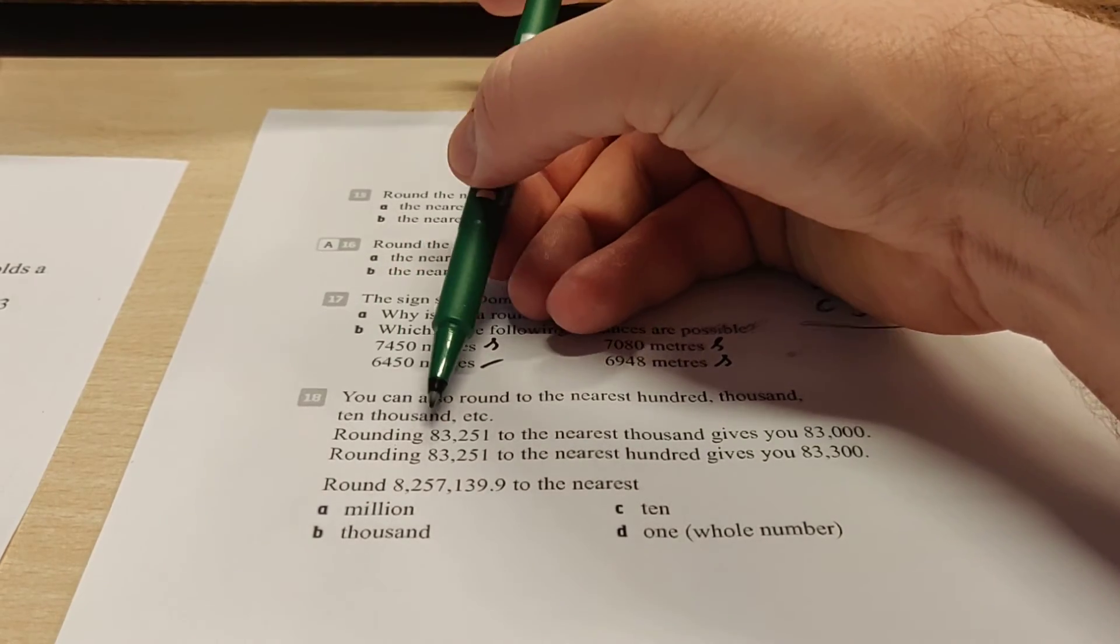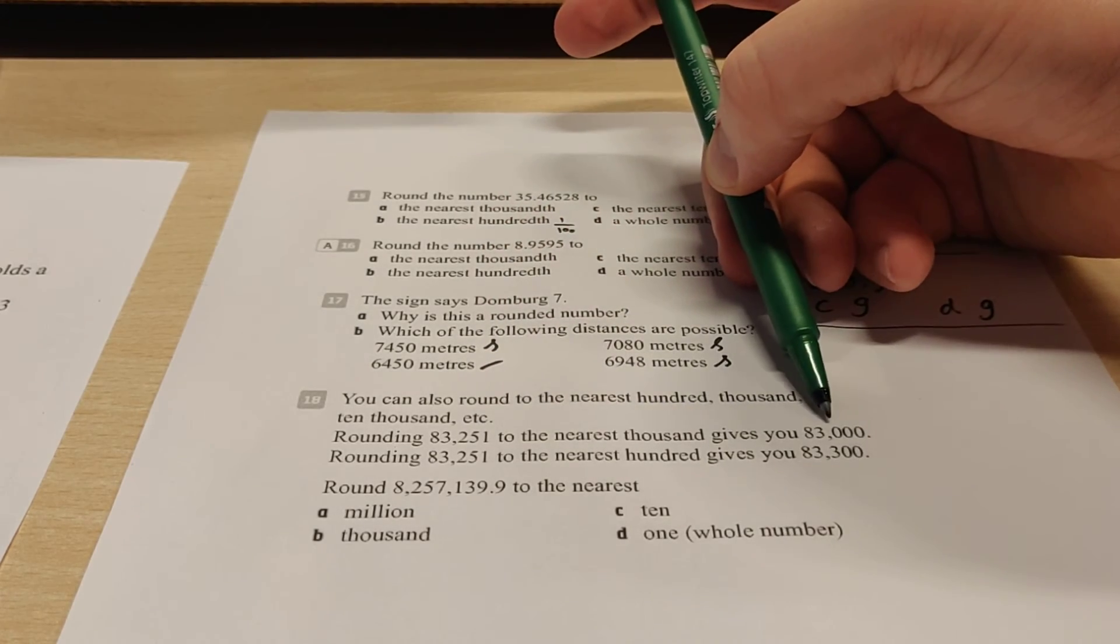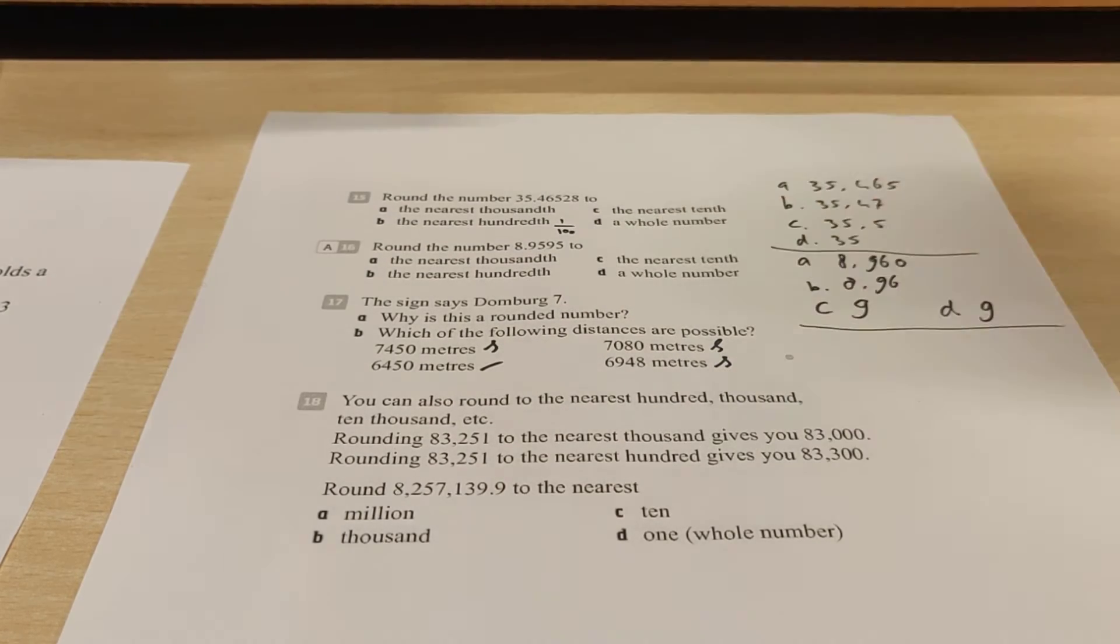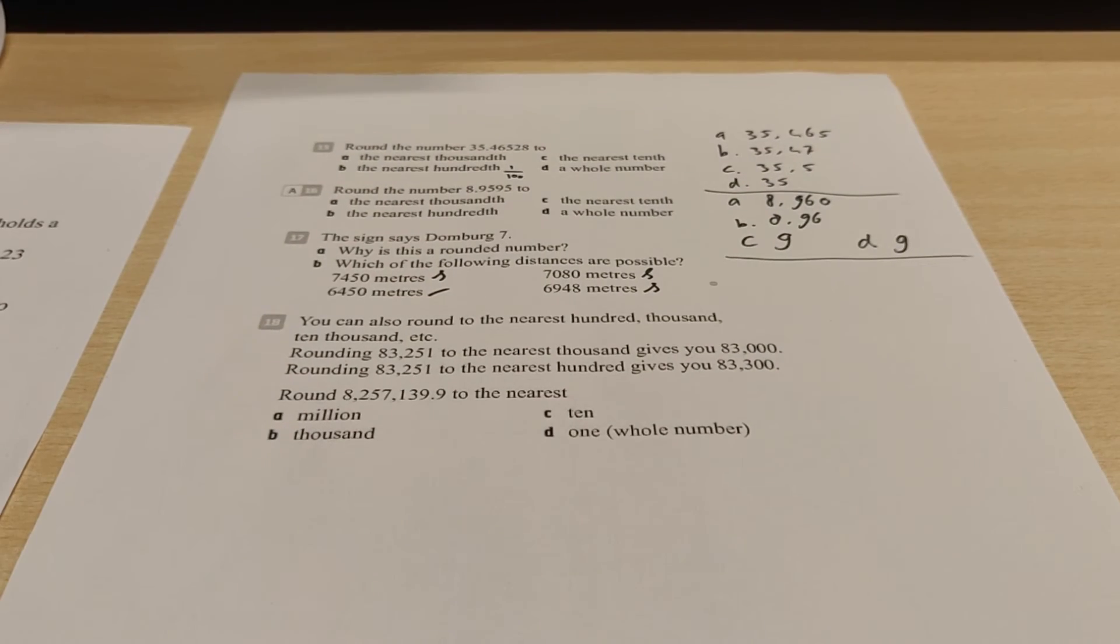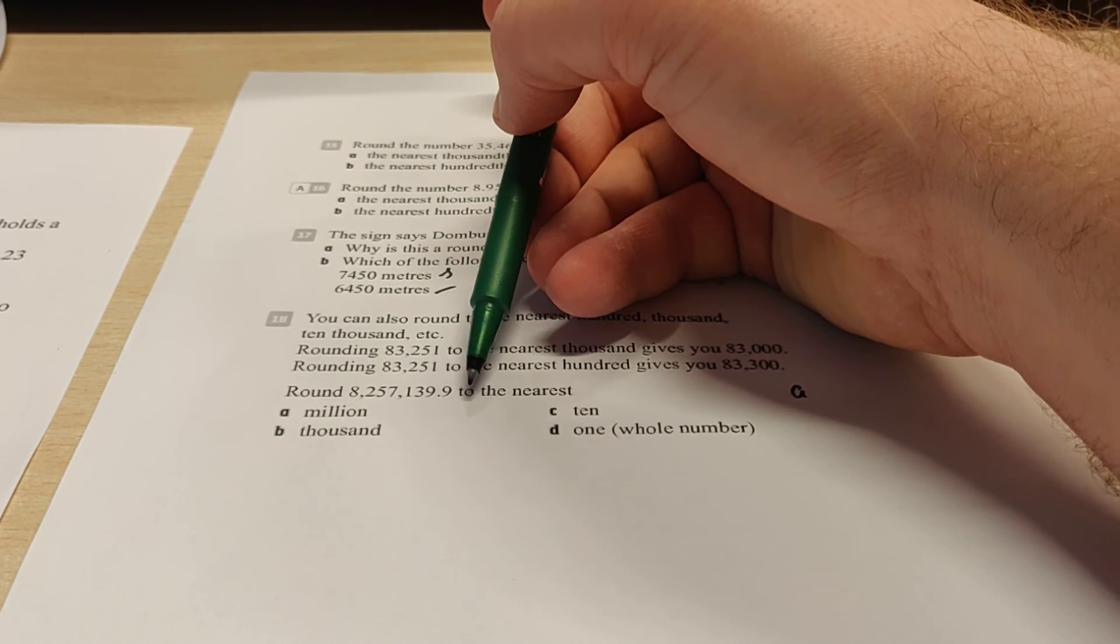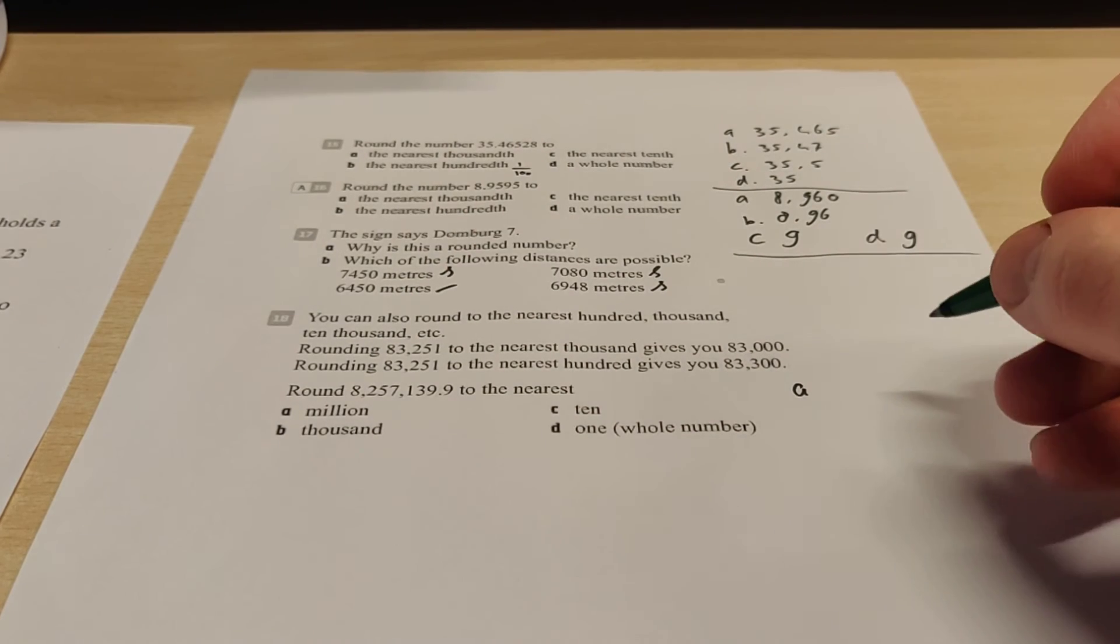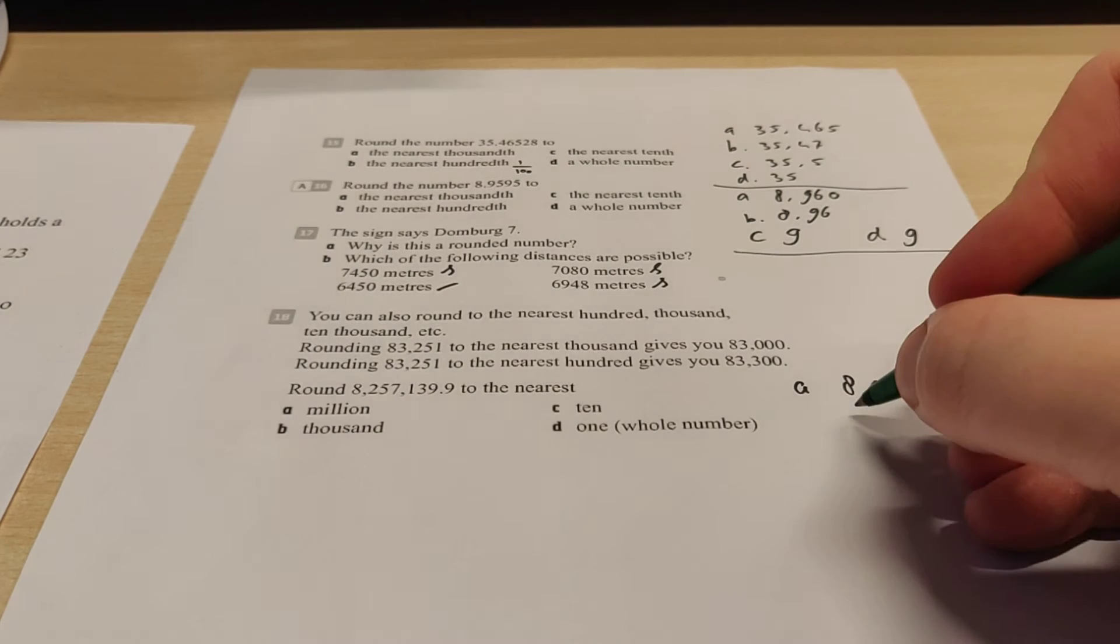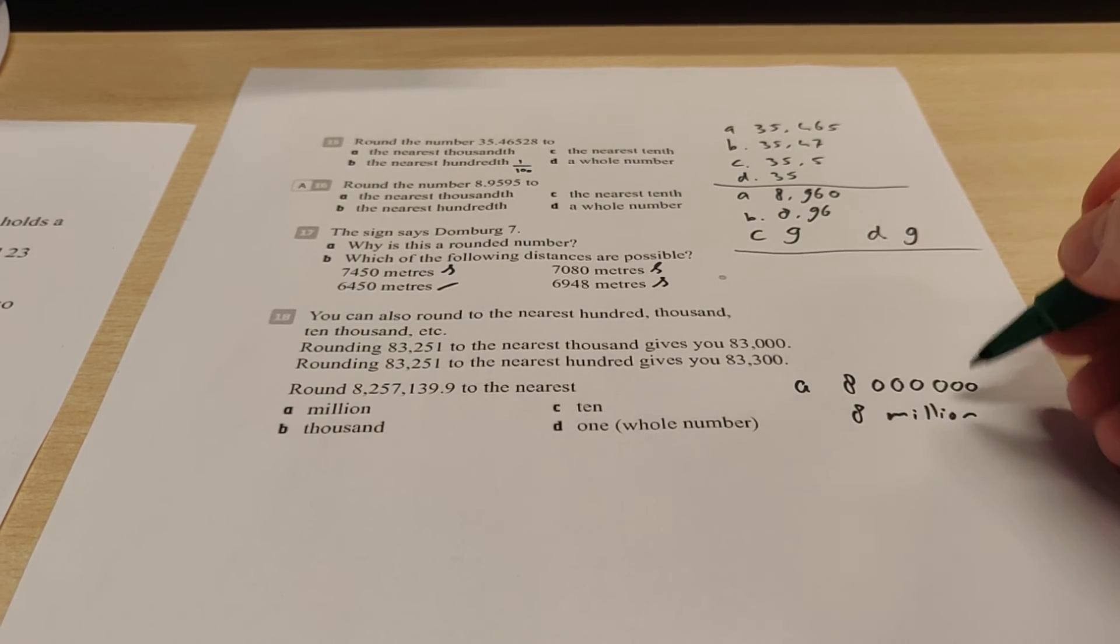It says here as an example, If you have 83,251 and you round it off to the nearest thousand, you get 83,000. Rounding it off to the nearest hundred, you get 83,300. That makes sense, because you need to round it off to hundreds. Here we have this number, and we need to round it off to the nearest million first. So that means that we have 8,257,000 and then some more. There's a 2 here. That means you round it off downwards. So this becomes 8,000,000. Now you can write that down as 8,000,000 like this with six zeros. But you can also write down 8 million and then you don't have to write down the zeros. Whatever you want.